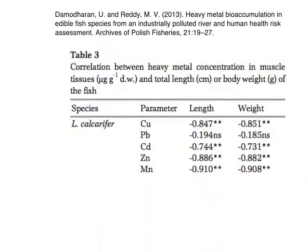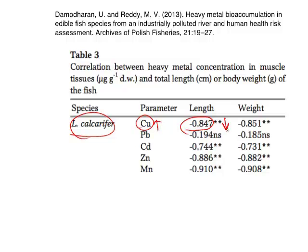Our third example comes from a study of heavy metal accumulation in rivers. The authors produce this table of correlation coefficients that explores the relationship between the heavy metal concentration in river water and the average length and weight of certain species of fish in those rivers. Here's the result for one of those fish species. One of the correlations recorded here is between copper and the length of the fish. This correlation is also negative — it's minus 0.847 — which means that as the copper concentration increases, the average length of the fish in that river decreases.